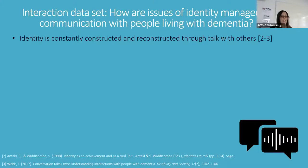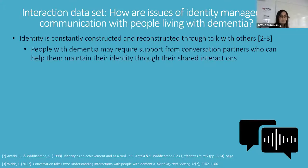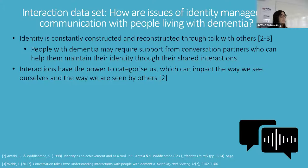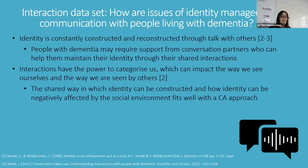Under a conversation analytic lens, identity is viewed as something which is constantly constructed and reconstructed through talk with others. People with dementia may require support from conversation partners, who can help them maintain their identity through shared interactions. Interactions also have the power to categorise us, which can impact the way we see ourselves and the way we are seen by others. This shared way in which identity can be constructed — and negatively affected by the social environment — fits well with a CA approach.